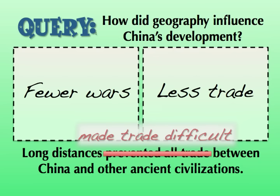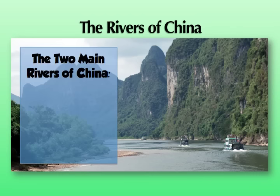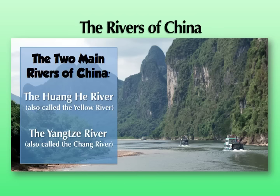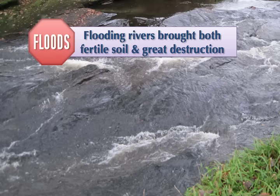Let's switch gears and talk a little bit about the rivers of China. There are two rivers I want you to know: one is called the Huanghi River, and the other is called the Yangtze River. What we see happening in China is a tendency by these rivers to flood, and that does two different things. On the one hand, it deposits fertile soil on the land around it after it floods. But of course there's also the destruction caused by the floods. So what we see here is, again, a mixed effect from these geographic features.